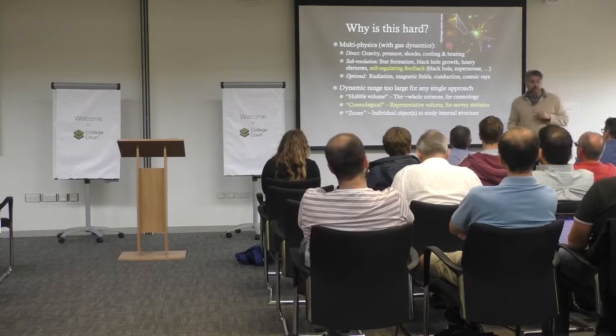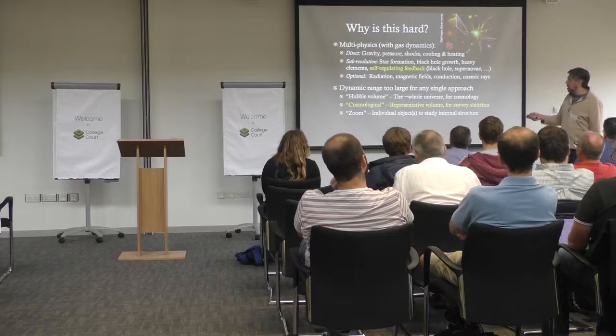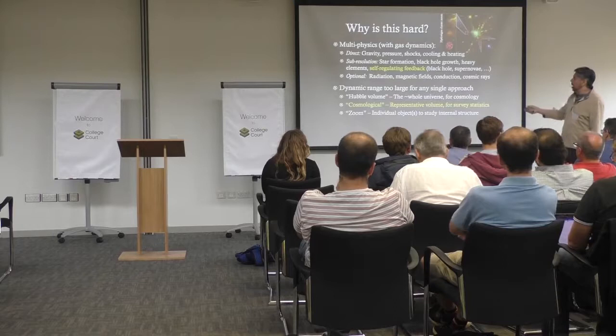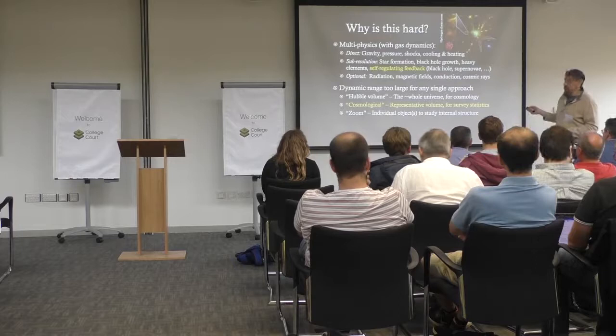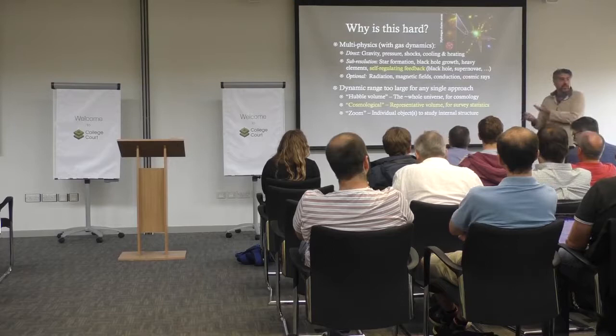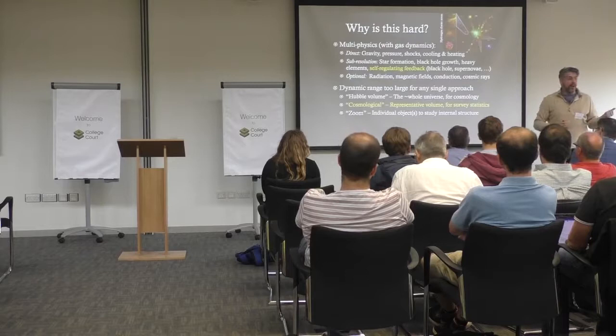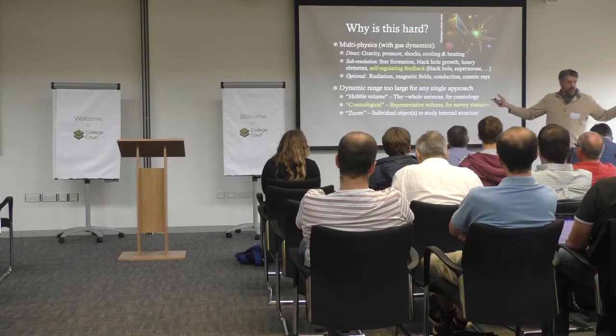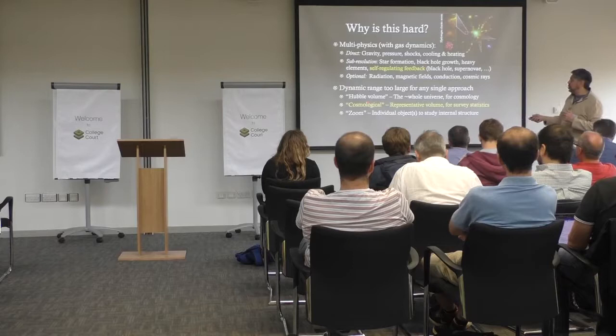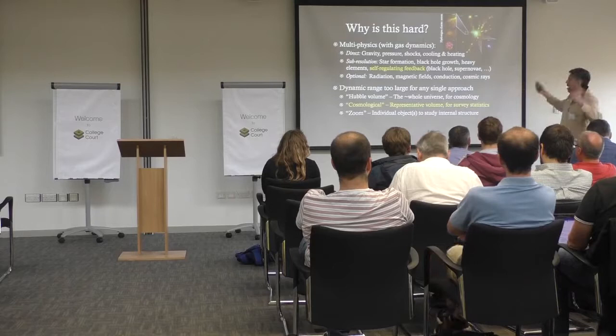There are also optional things we think might be important but aren't sure — radiation transport, magnetic fields, conduction, cosmic rays — that may or may not be important, but we can use the simulations as numerical experiments to test these things. The other issue is that the dynamic range is very large. In the very largest volumes, gravity is the dominant thing and we don't have to worry about small-scale processes. We can try to model gigaparsec-cube volumes, comparable in order of magnitude to the size of the universe, which is very useful for cosmology, though it doesn't really give you galaxies unless you somehow paint the galaxies into your dark matter.